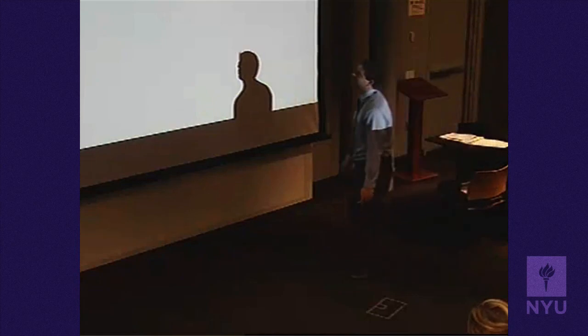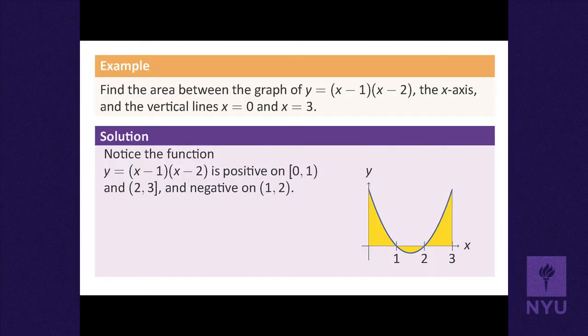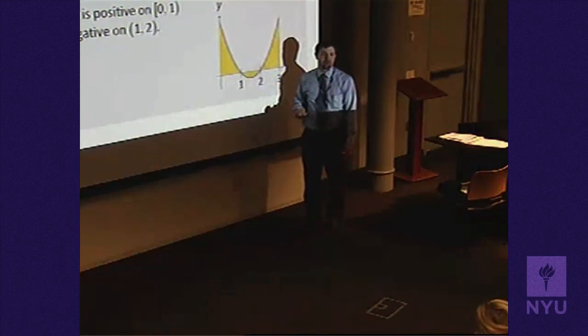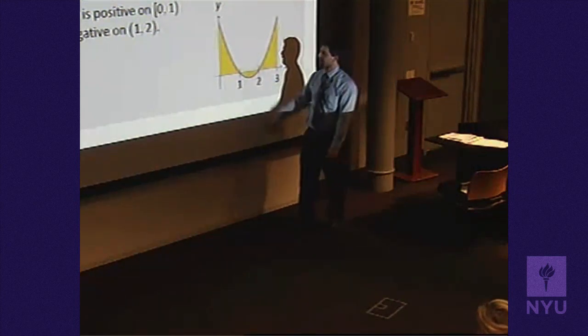Once you graph the parabola — it's quadratic and factors as (x-1)(x-2), so it crosses the x-axis at x = 1 and x = 2 — you see the region is broken into three pieces between x = 0 and x = 3, with the middle piece dipping below the x-axis.